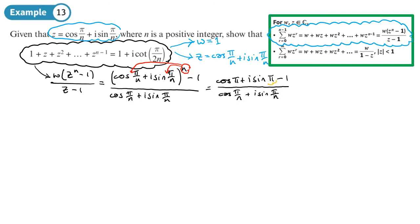Now, cos(π) + i·sin(π) is the number negative 1. You may not recognise it in that form, but written as e^(iπ), you'll recognise that as Euler's identity: e^(iπ) = −1. So that expression in the numerator is −1 − 1, which is −2. The top becomes −2 over cos(π/n) + i·sin(π/n) − 1.